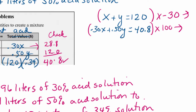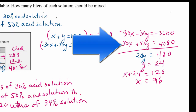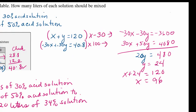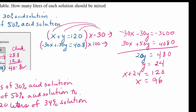I used the elimination method for variety this time. I multiplied the second equation by 100 to eliminate the decimals, getting 30x plus 50y equals 4080. Then I multiplied the first equation by negative 30 to eliminate x, giving me 20y equals 480, so y equals 24.